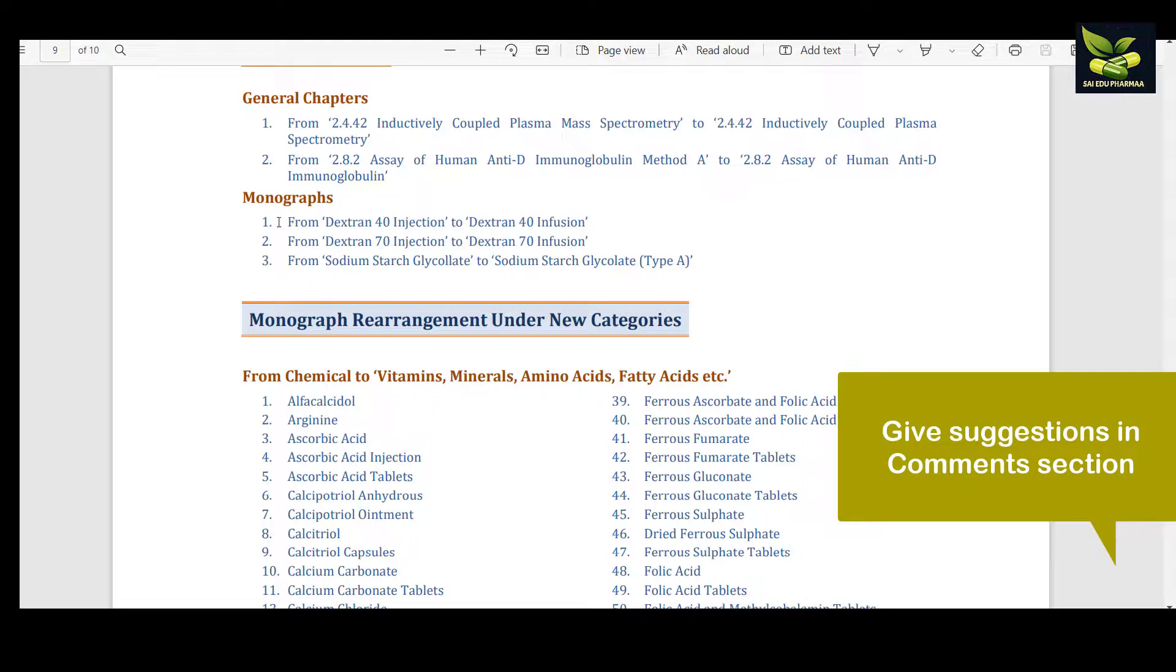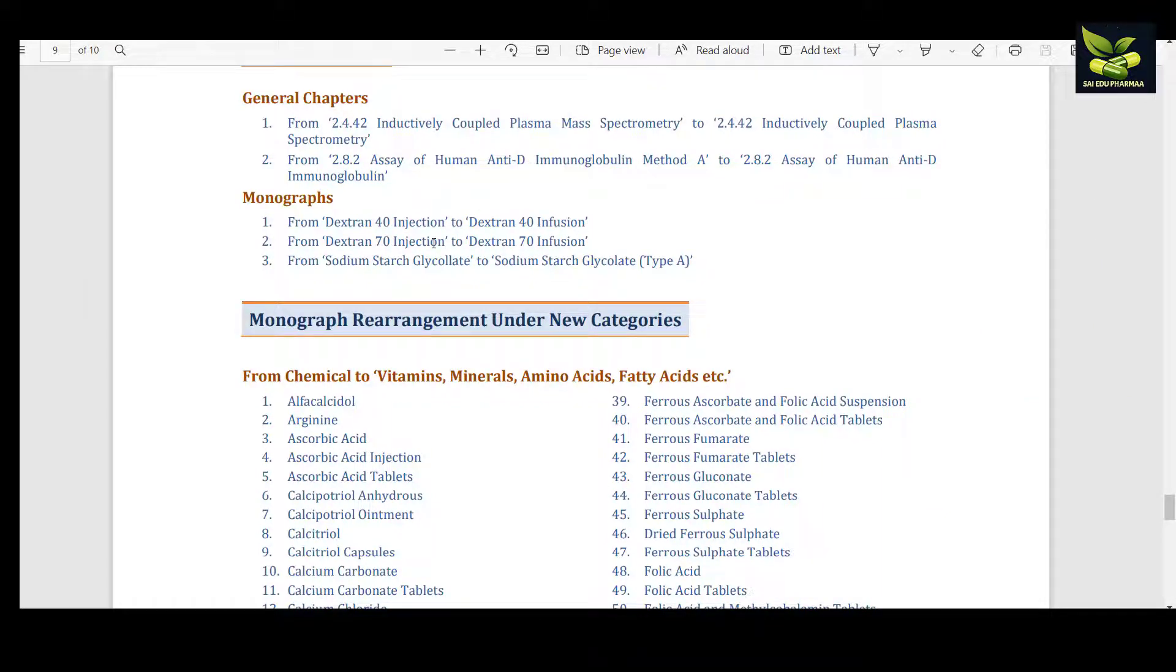In the case of monographs, Dextran 40 injection has been changed to Dextran 40 infusion, and Dextran 70 injection has been changed to infusion. Sodium starch glycolate will now be known as sodium starch glycolate type A.